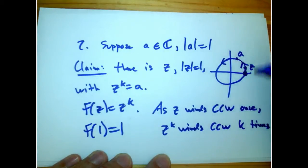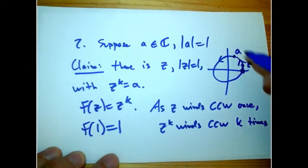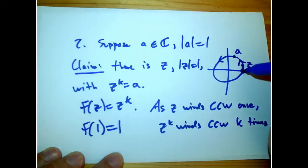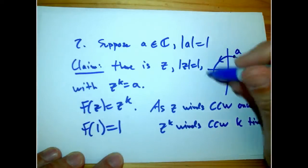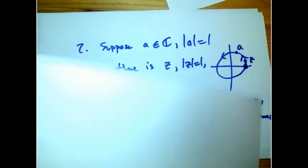And so z^k is a point that starts here and winds repeatedly around the unit circle. It's going to hit everything. Eventually, it's going to hit a. It has to go through a. And to make that precise would be a little bit of work. But what we're depending on is the fact that if I take a path on the circle that winds at least once around the circle, it's going to hit everything on the circle. Topologically, at the level of intuitive topology, it's pretty obvious.